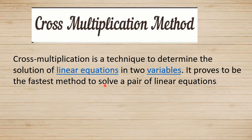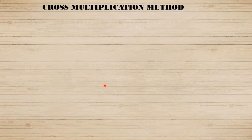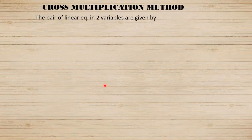Let's take two pairs of linear equations in two variables. As we know, the standard form of the linear equation in two variables is a1x + b1y + c1 = 0 and a2x + b2y + c2 = 0. This is the standard form of the pair of linear equations in two variables.